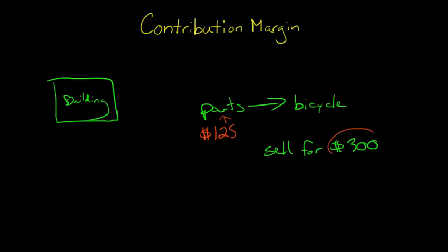So then you say, okay, well, I sold the bike for $300, and then I have to deduct this $125 in parts. So you take that out, and then you have $175 is the difference there.